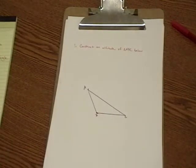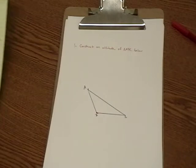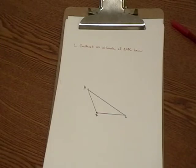We're going to show the constructions that are old Regents exam questions from Common Core Geometry. First, we're going to construct an altitude of the triangle ABC below.